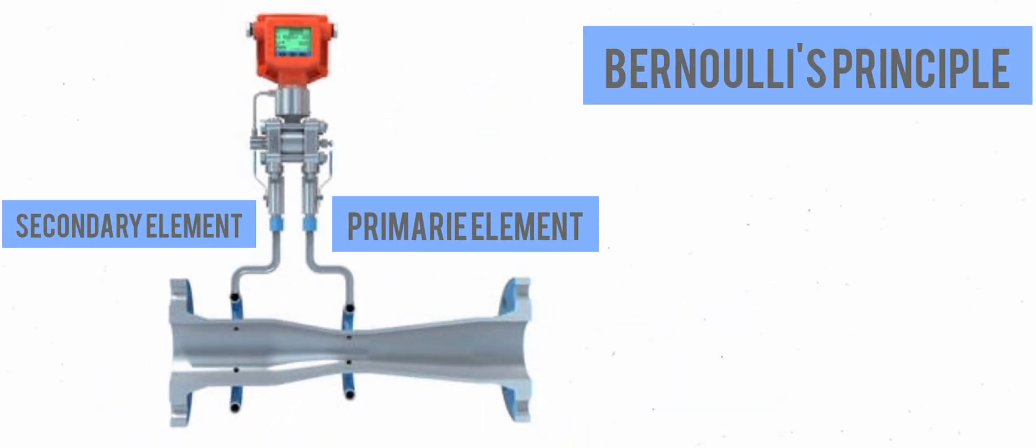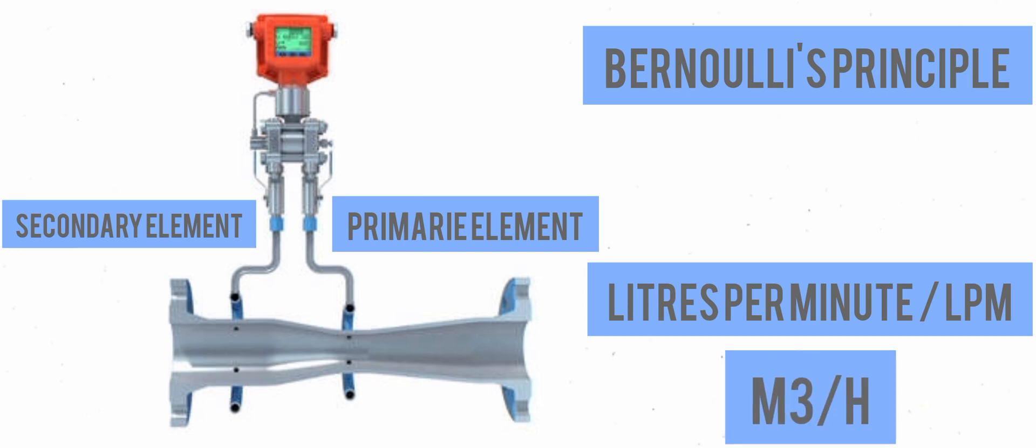By using Bernoulli's law, which states that the pressure drop across the constriction is proportional to the square of the flow rate, the differential pressure is then converted into units of flow. These units of flow can be liter per minute or cubic meters per hour.